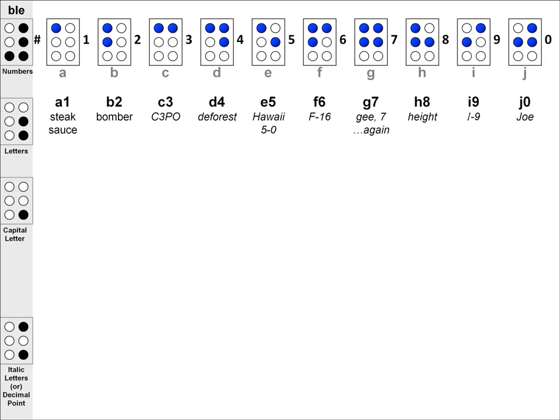There we go, that's all the letters A through J and their corresponding numbers. Now, let's look at another numbers example and try to translate it using our new memory aids.